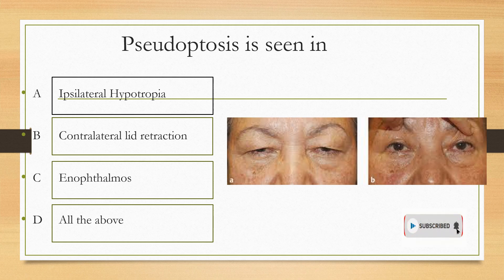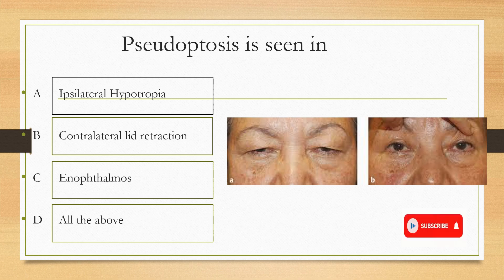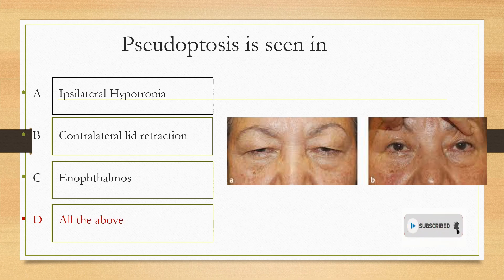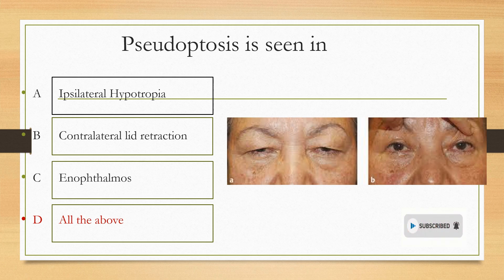Pseudoptosis is seen in which of the following conditions? Option A ipsilateral hypotropia, option B contralateral lid retraction, option C enophthalmos, option D all of the above. The answer is all of the above — in all these cases, pseudoptosis is seen. That's all for today's video. If you like my channel, kindly like, share and subscribe. Thanks for watching.